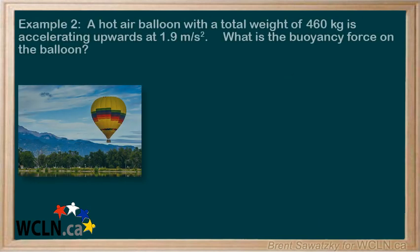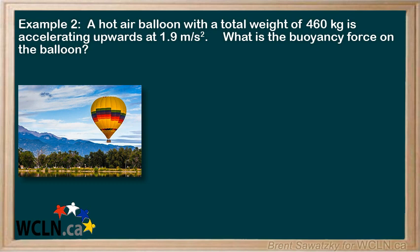Example 2. A hot air balloon with a total mass of 460 kilograms is accelerating upwards at 1.9 meters per second squared. What is the buoyancy force on the balloon? So our first step, a good free body diagram. And we can show our force of gravity pulling that balloon down, but the buoyancy force, due to the balloon's collected hot air, is pushing that balloon up. Now in this case, the balloon is accelerating upward, so let's set up as our positive.